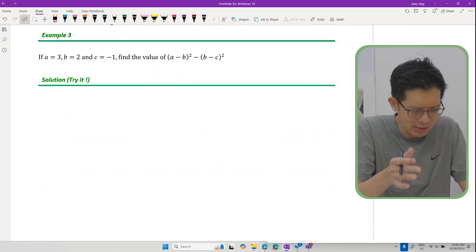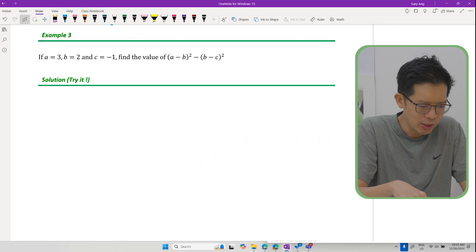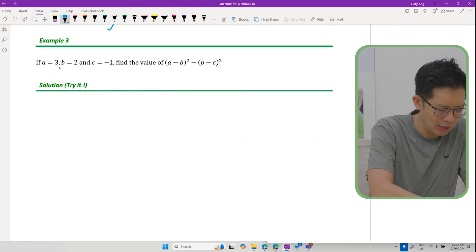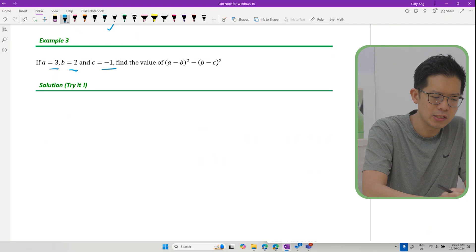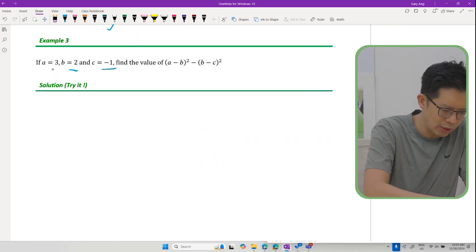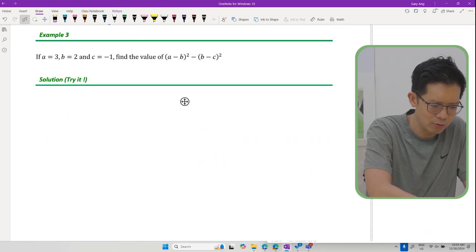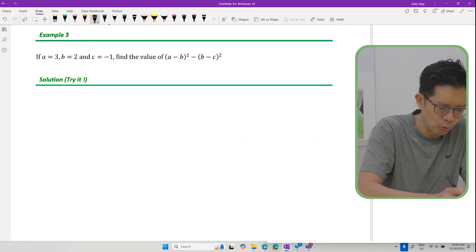Example 3 is more or less the same thing. We have A is equal to 3, B is equal to 2, C is equal to minus 1. All we need to do is to punch this number into the correct spacing. I'm not going to draw so many arrows anymore otherwise it really looks quite messy. Working wise it should be a bit like this.